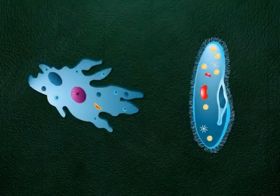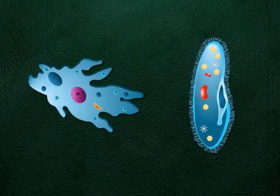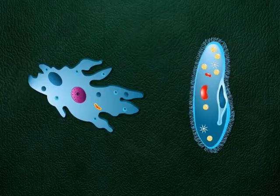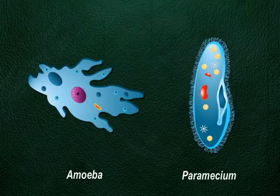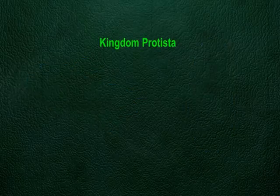Look at these figures. Can you recall these organisms? This one is amoeba and this one paramecium. Do you know that these are neither plants nor animals? So what are they then? They form a separate kingdom — Kingdom Protista.